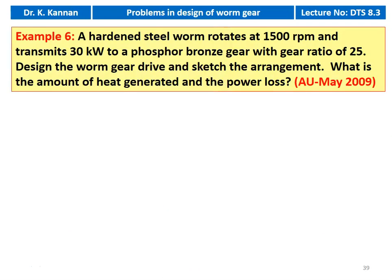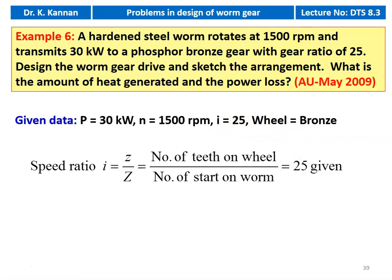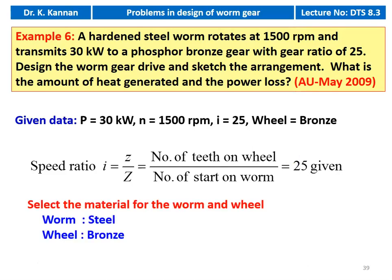We take the last example, Example number 6 from the May 2009 question paper. A hardened steel worm rotates at 1500 RPM and transmits 30 kW to a phosphor bronze gear with a gear ratio of 25. Design the worm gear drive and sketch the arrangement. What is the amount of heat generated and the power loss? Given data: power = 30 kW, N = 1500 RPM, speed ratio i = 25, wheel made of phosphor bronze. Worm is made of steel.